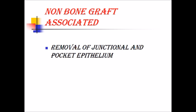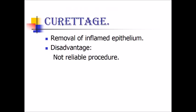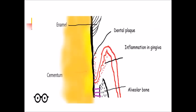Non-bone-graft-associated regeneration can be achieved by removal of junctional epithelium and pocket epithelium. In curettage, removal of inflamed epithelium is done. The major disadvantage is it is a non-reliable procedure. In the diagram, because of plaque and calculus, pocket formation is present, with inflammation in the gingival tissues, destruction of periodontal ligament, and destruction of bone.